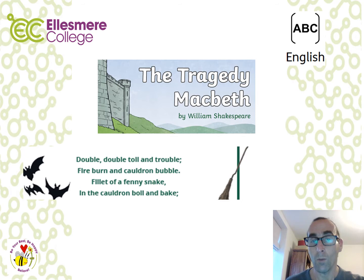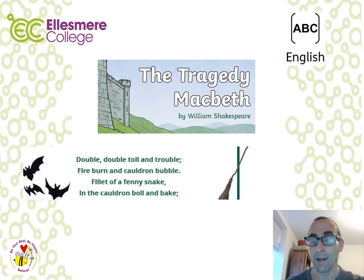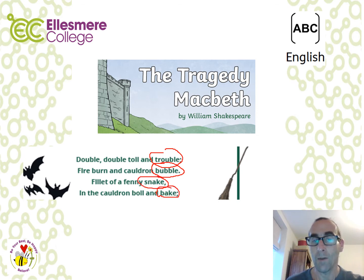In lesson four you'll be looking at rhyming words. Here you can see a very famous part of the spell by the witches: 'Double, double toil and trouble, fire burn and cauldron bubble, fillet of a fenny snake in the cauldron boil and bake.' The rhyming words are trouble with bubble, and snake with bake. There'll be opportunities to develop your own spell and your own rhymes.